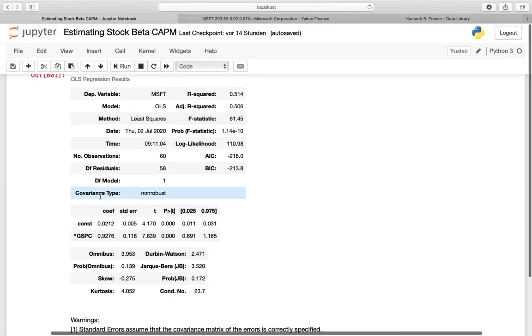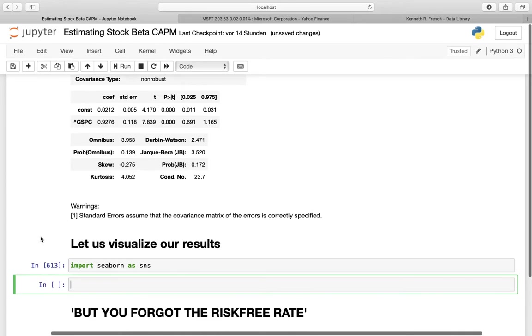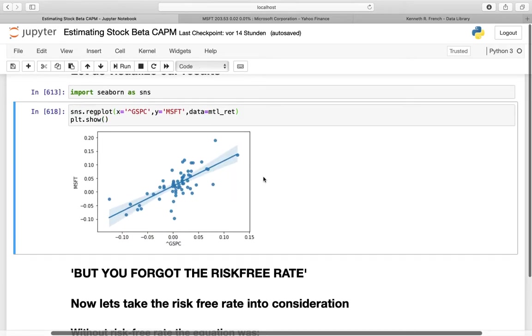Let's go back and visualize our results. I'm using seaborn here, so I'm importing seaborn as SNS. But you could also use matplotlib, so for example, the scatterplot. And I'm using SNS.regplot here, defining my x as the market return, GSPC, and the y as the return of Microsoft. And also I have to specify my data frame here, and that is our monthly returns, where these data are contained. And what we are seeing here are the regression results in a visual form. So this line here has a slope of 0.93, which is our beta.